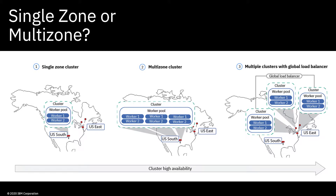You can also scale beyond regions by deploying multiple clusters in multiple regions and then using a global load balancer to access the applications, as shown in the diagram here. The diagram shows North America, but you can of course create clusters in single zones and multi-zone regions across the globe — so if you wanted to create a multiple cluster deployment with a global load balancer spanning locations around the globe, you can do that.